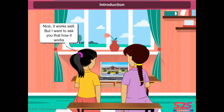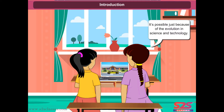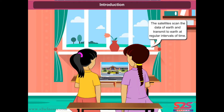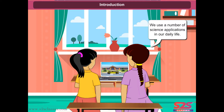But I want to ask you how it works. It's possible just because of evolution in science and technology. It works on the principle of satellite communication. The satellites scan the data of earth and transmit to earth at regular intervals of time. We use a number of science applications in our daily life. Let's learn more about the valuable impacts of science and the physical world.